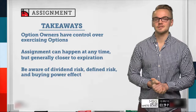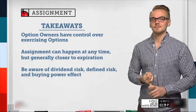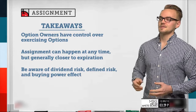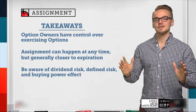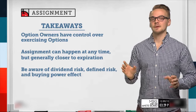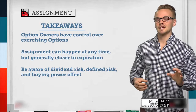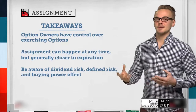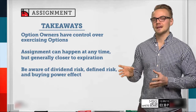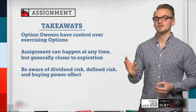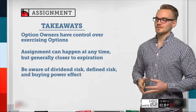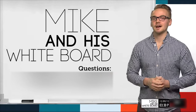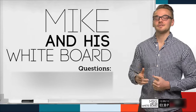Third, be aware of dividend risk, defined risk edge cases, and buying power effects. For dividend risk, check the ex-dividend date and ensure the dividend isn't more than the extrinsic value of your in-the-money short call. For defined risk spreads, if only your short option is in the money going through expiration, it can act like an undefined risk trade. And buying power: while your risk profile may not change, your buying power will change significantly going from a short put to long stock, or from a short call to short stock.